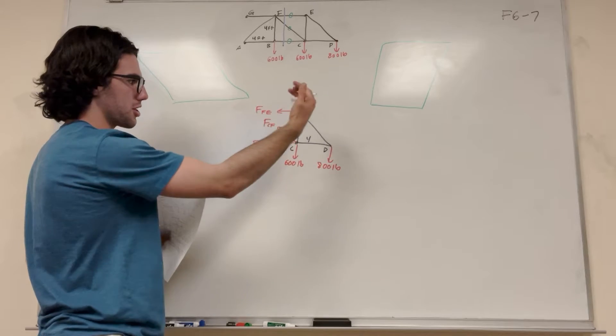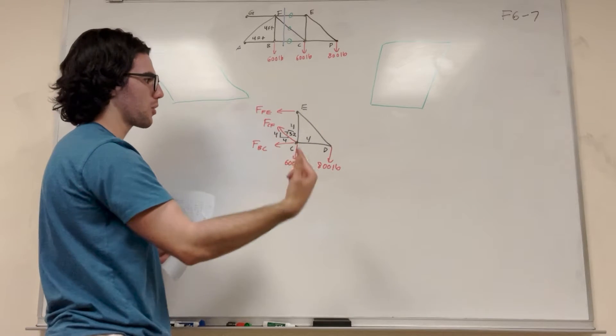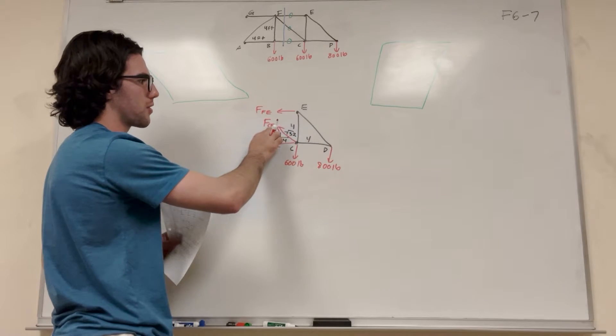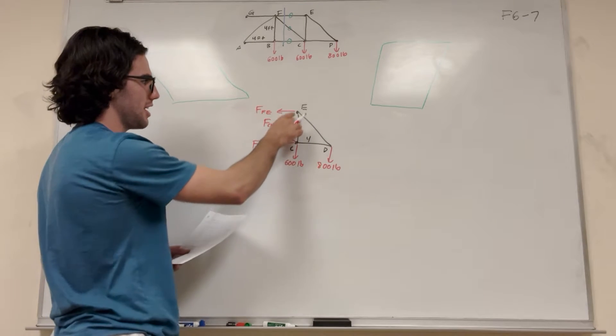BC and FE are pushing sideways, so we don't have to worry about those in Y. This pushes upward, so this is going to be in the sum of the forces Y. But then you might ask yourself, what about CE? What about DE?